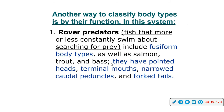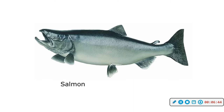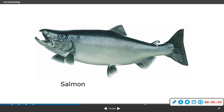You can also classify body types by their functions. Rover predators are your more fusiform body types like salmon, trout, and bass. They have pointed heads, terminal mouths, narrowed caudal peduncles, and forked tails. Here is your salmon — notice that adipose fin we were talking about earlier.